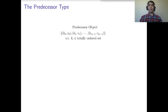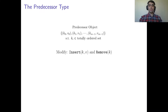In the implementation of our single-writer adaptive partial snapshot object, we use single-writer predecessor objects. A predecessor object maintains a set of key-value pairs such that the keys belong to a totally ordered set. This object provides two types of operations: modify operations, which include insert and remove, and query operations, which include predecessor and successor. The definitions of insert and remove are straightforward. A predecessor(k) returns the greatest pair with key less than or equal to k, and a successor(k) returns the smallest pair with key greater than k. In a single-writer version, only one process may perform modify operations.